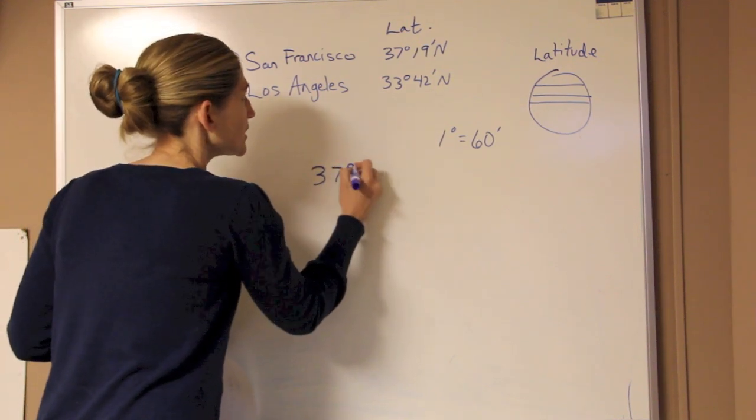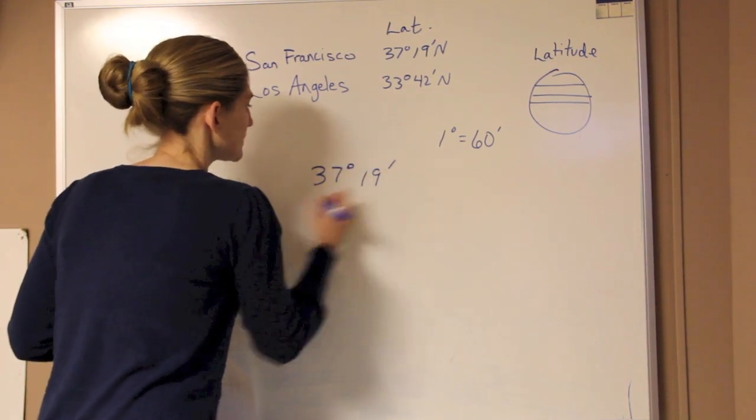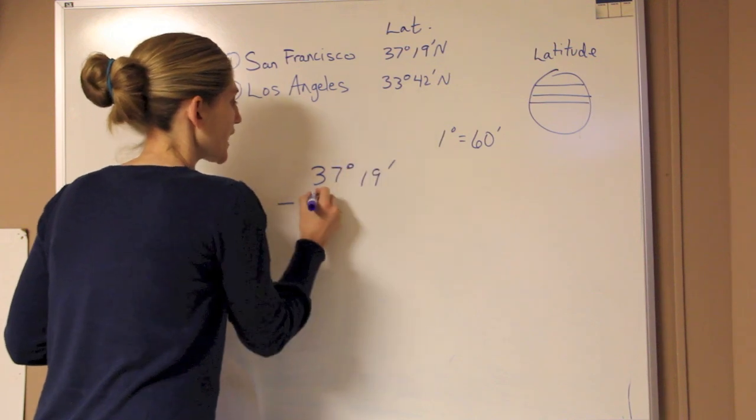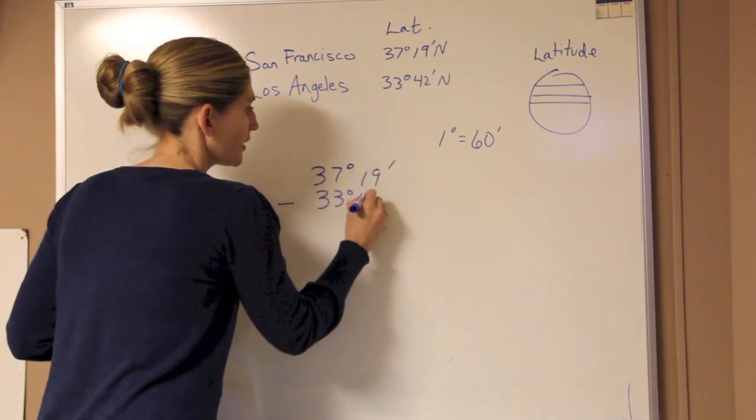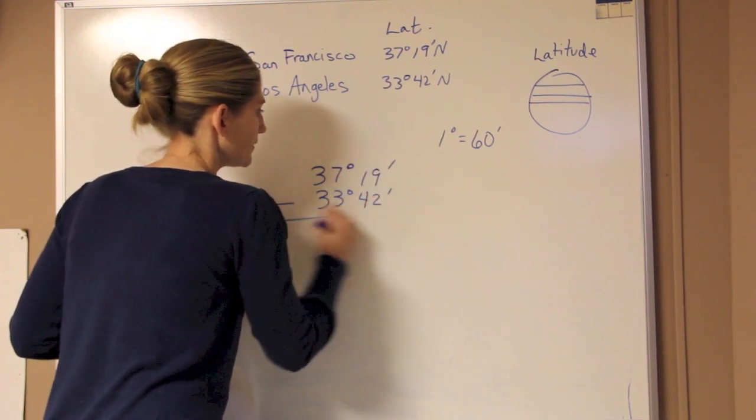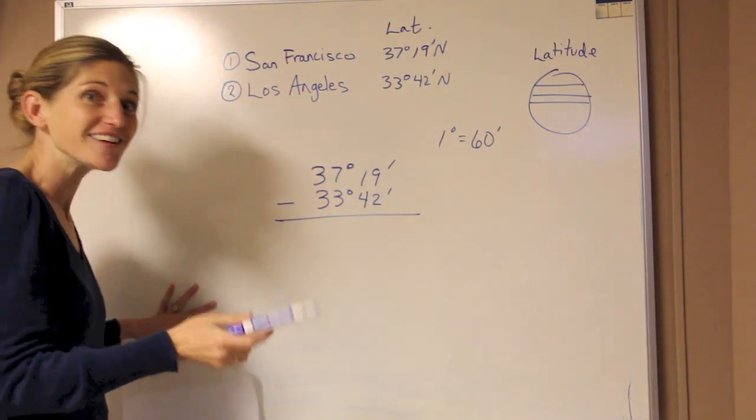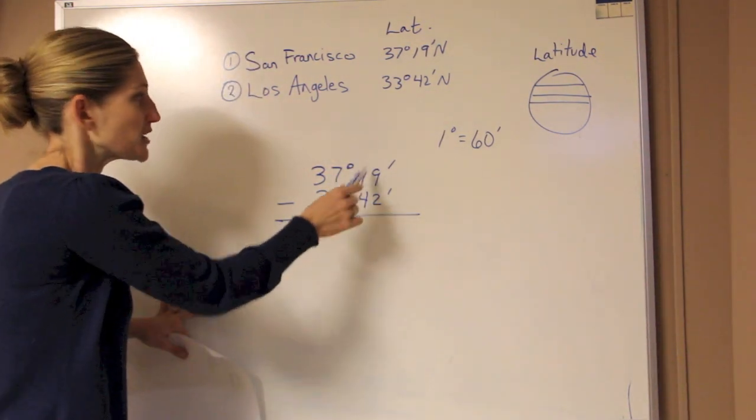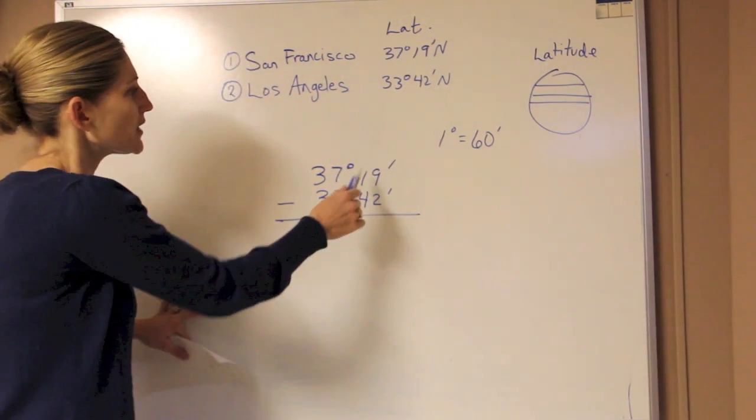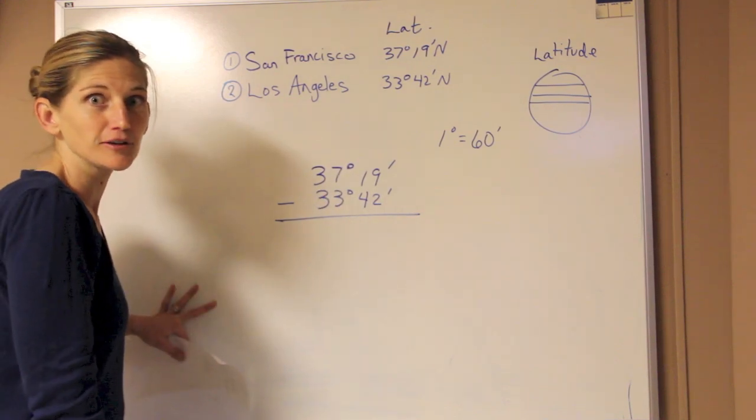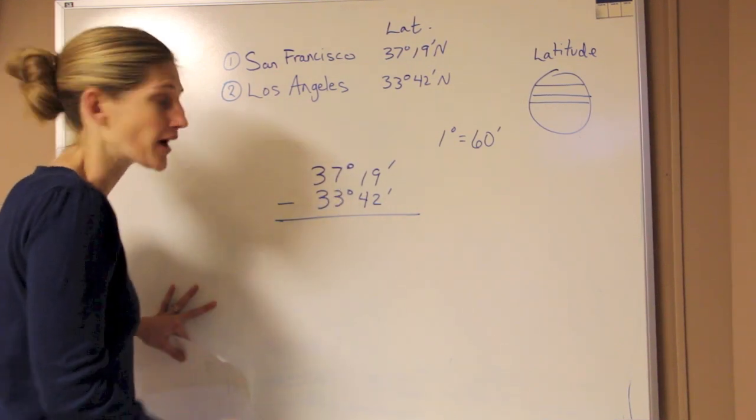So to set this up, we have 37 degrees, 19 minutes, and we're going to subtract Los Angeles, 33 degrees and 42 minutes. Now what we'll see over here, if we're trying to subtract 42 from 19, we know that 19 isn't big enough. There's not enough minutes there to do this math correctly.